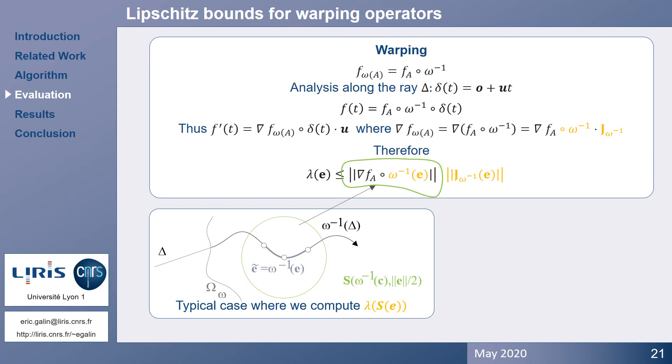The first term involves the gradient of the child field function evaluated over the deformed segment. This is a characteristic complex case, and we resort to evaluating the bound not over the deformed segment, which would be complex, but instead over the sphere embedding the deformed segment. The second term involves the norm of the Jacobian of the transformation. Whenever possible, we compute the spectral norm of the Jacobian, and refer to the paper for details and equations for the tapering operator.